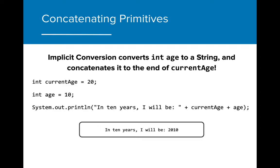Although the answer we're looking for is 30, implicit conversion changes the int age into a string type, which concatenates the value of 10 to the end of 20 instead of adding the values together.